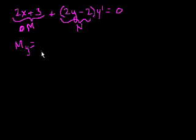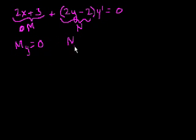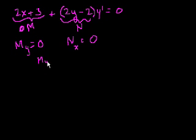The partial of M with respect to y: there's no y in M, so it's 0. The rate of change with respect to y is 0. And the partial of N with respect to x: there's no x in N, so these are just constants from an x point of view, and that's also 0. We see that both partials are 0, so M sub y equals N sub x. This equation is exact.